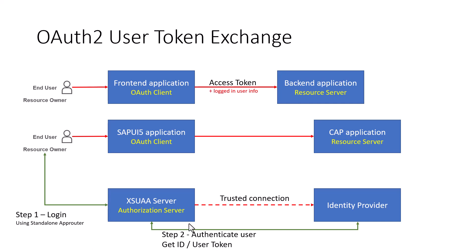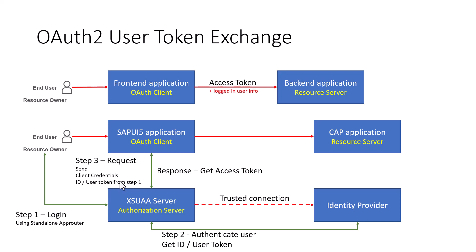The ID token contains user profile information like the name, email, and maybe a profile picture. The identity provider gives you this user profile information. The end user can then make a request to get authorized to the CAP application — they need to get an access token. They send a request to the XSUAA server passing in the client credentials, and in addition to the client credentials, you also pass the ID token or user token from step one, which contains the user profile information. In response, you get an access token which now contains the logged-in user info.